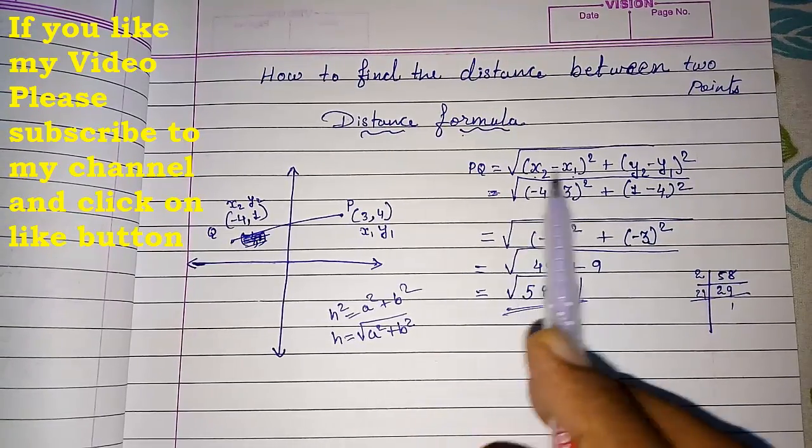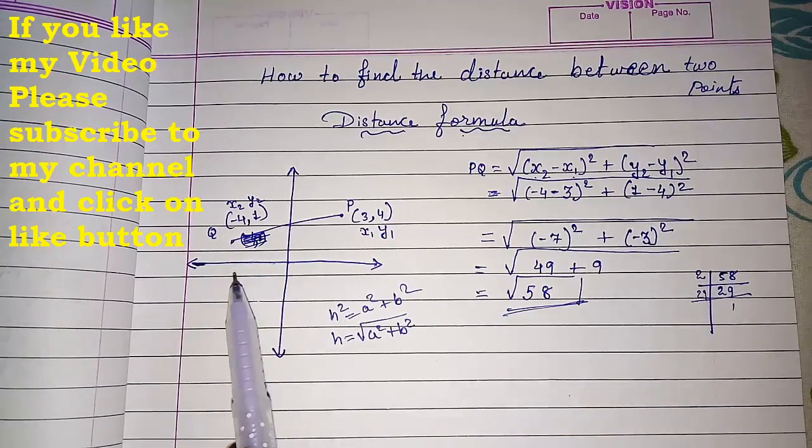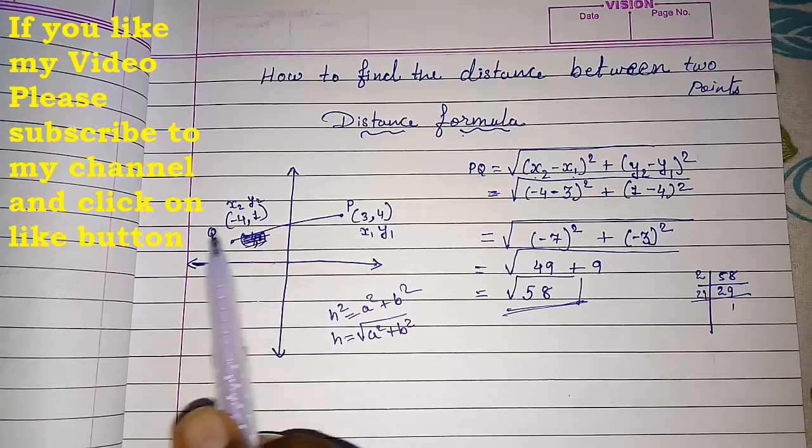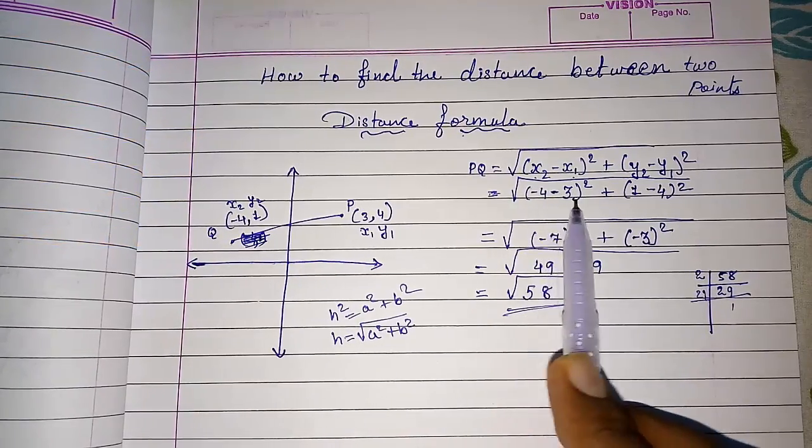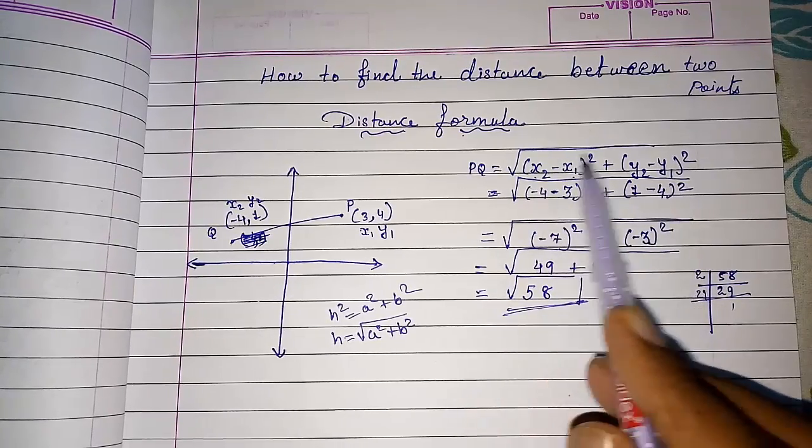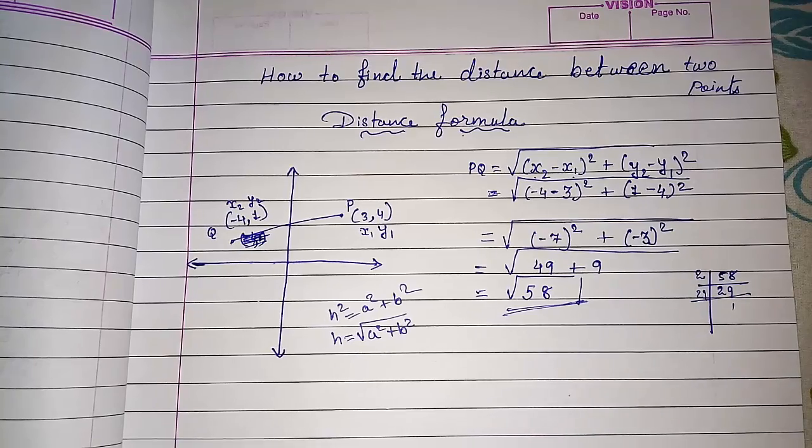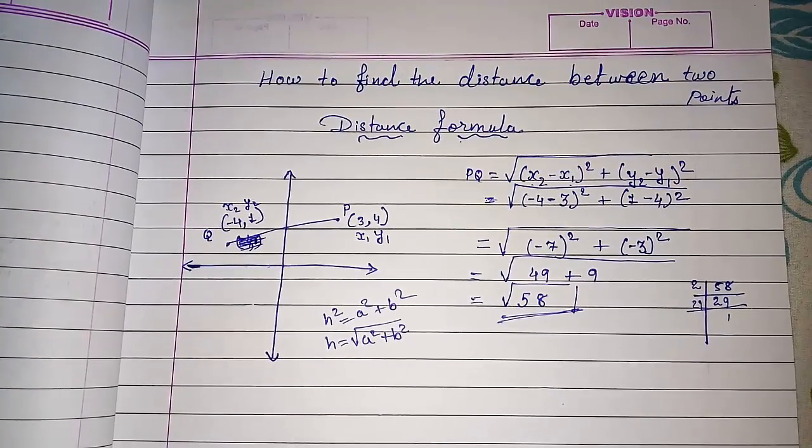So this way we can find the distance between any two points. I have seen where students are making mistakes. They generally take -4 and then -3, so they make mistakes in adding these numbers. Please be careful while adding these numbers. All other things they can do easily. Thank you so much for watching my video. If you like it, please subscribe to my channel so that I can bring more such videos for you. Thank you so much.